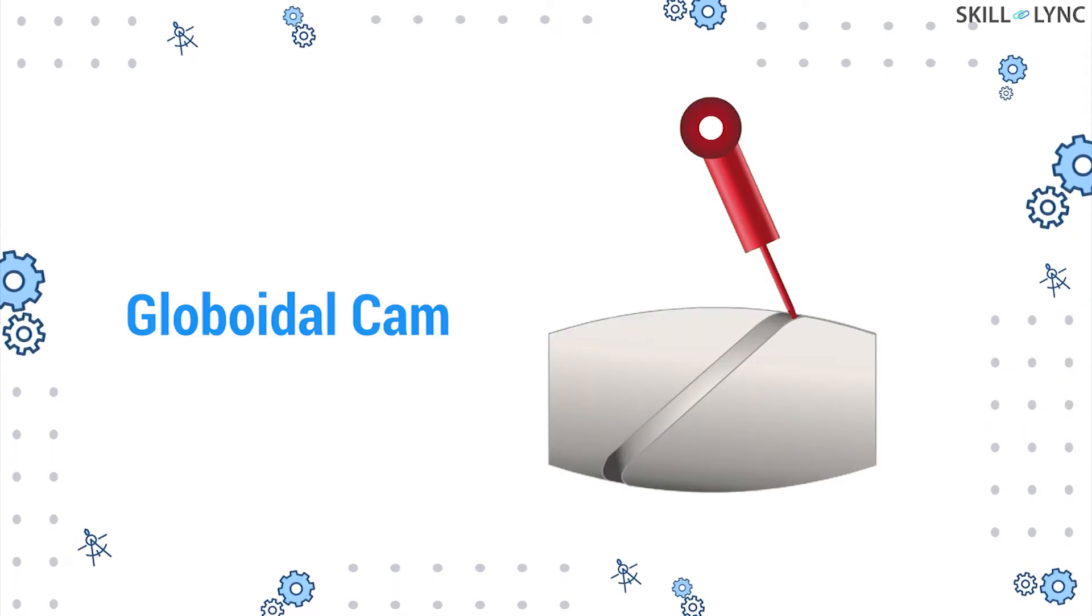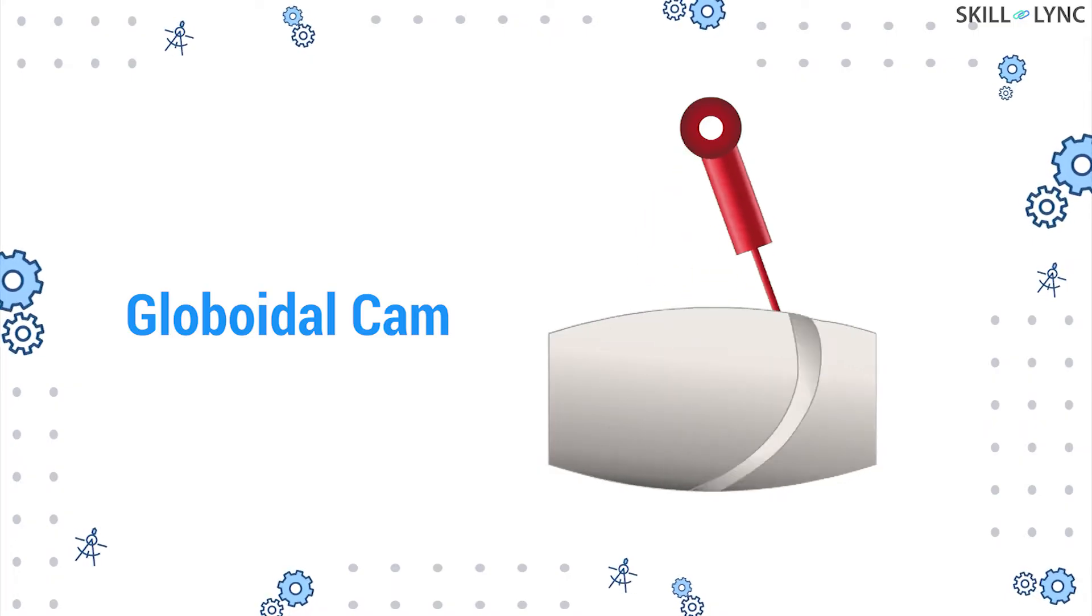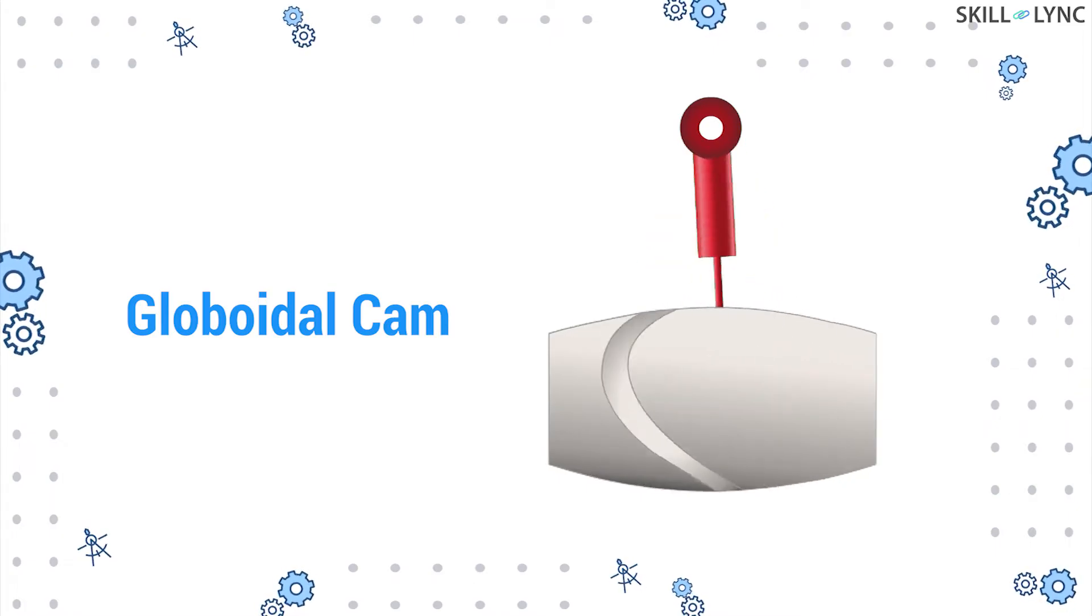Then we have the globoidal cam. It is similar to the cylindrical cam but the surface of the cam will be either concave or convex. In this type, the follower oscillates about the fulcrum.